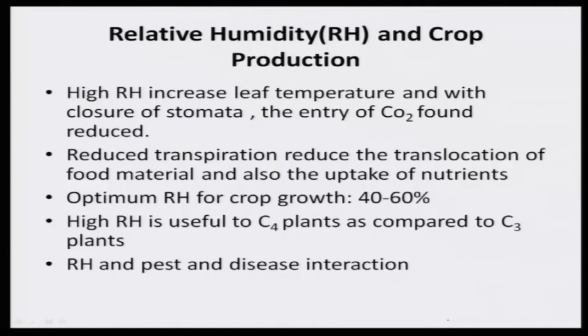However, we cannot eliminate high RH entirely. High RH is useful to C4 plants like maize, sorghum, and sugarcane as compared to C3 plants like rice, because the photosynthetic pathway differs between these two. High RH is highly useful to C4 plants. There is also a good amount of interaction between relative humidity and disease — a thumb rule between the prevalence of RH and disease spore initiation, multiplication, and growth. Pest and disease in crop production everywhere, RH plays a vital role.